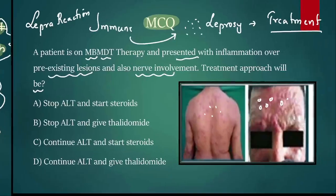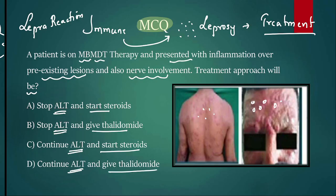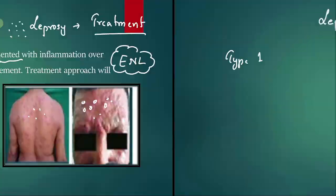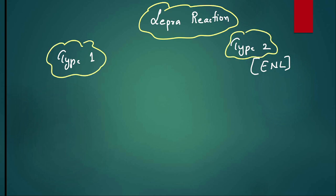When there is a lepra reaction, you can see the nodules have increased in size and there are rashes in the image. The four options are: stop anti-leprosy therapy and start steroids; stop anti-leprosy therapy and give thalidomide; continue anti-leprosy therapy and start steroids; or continue anti-leprosy therapy and give thalidomide. Since there is redness and nodules, this is erythema nodosum leprosum. We do not stop leprosy treatment, but we suppress immunity using steroids. The correct answer is C.